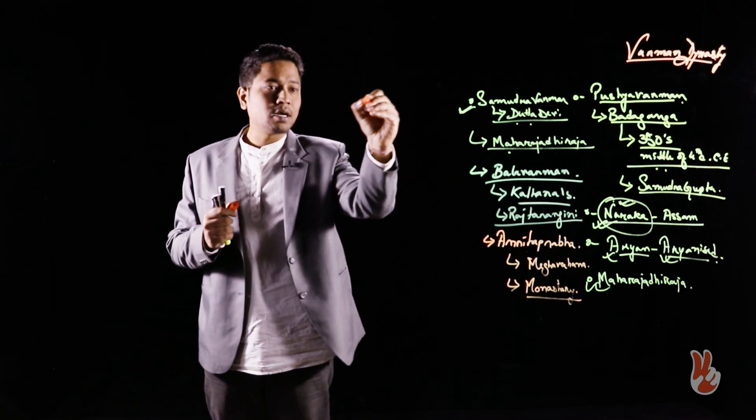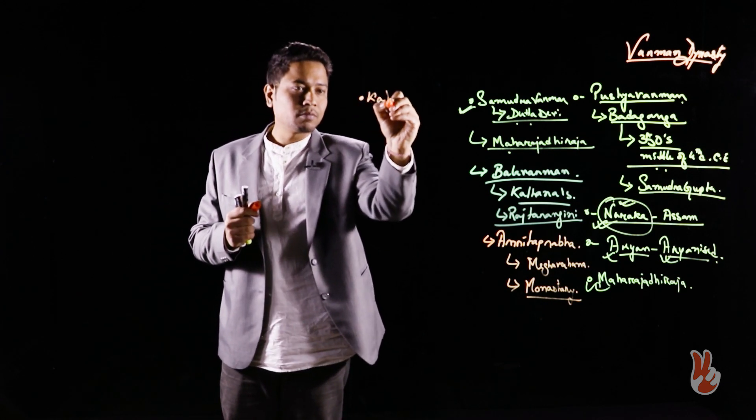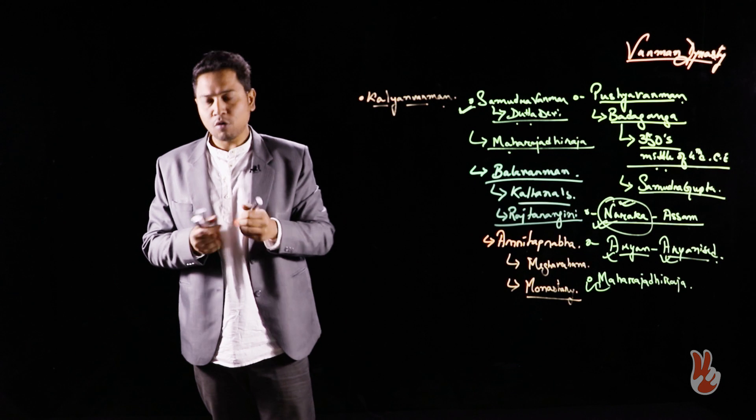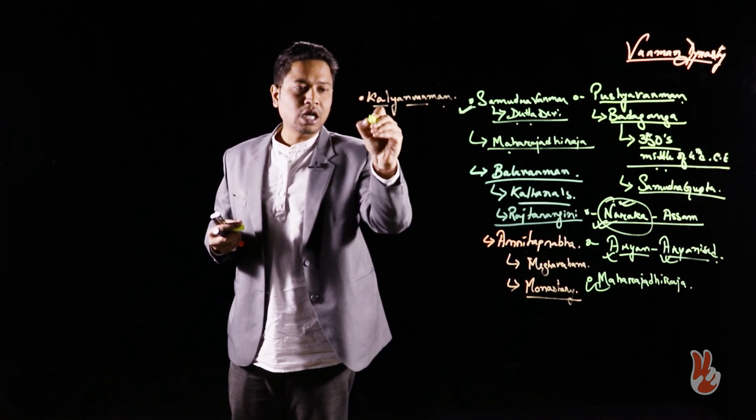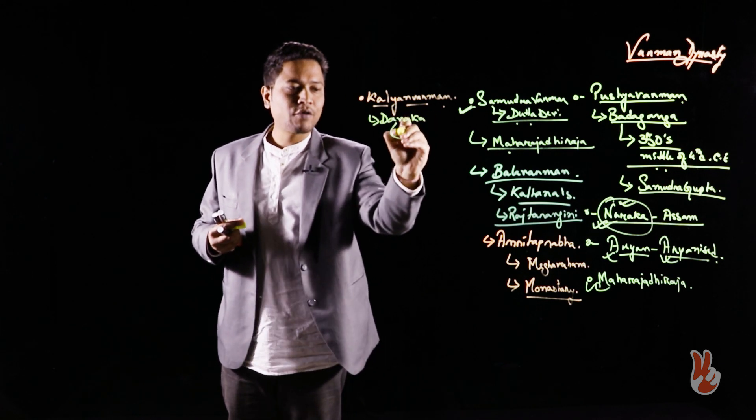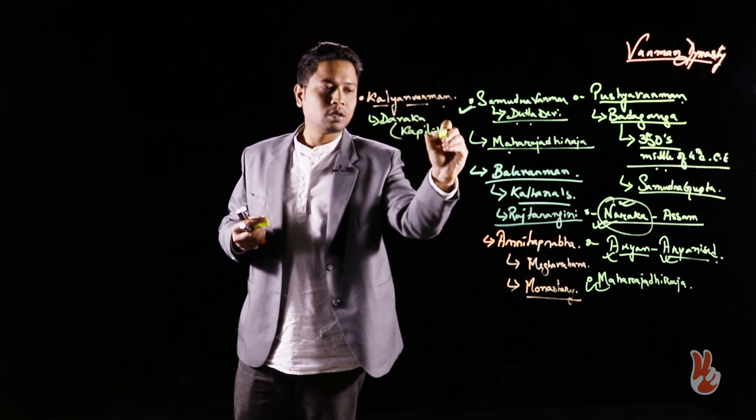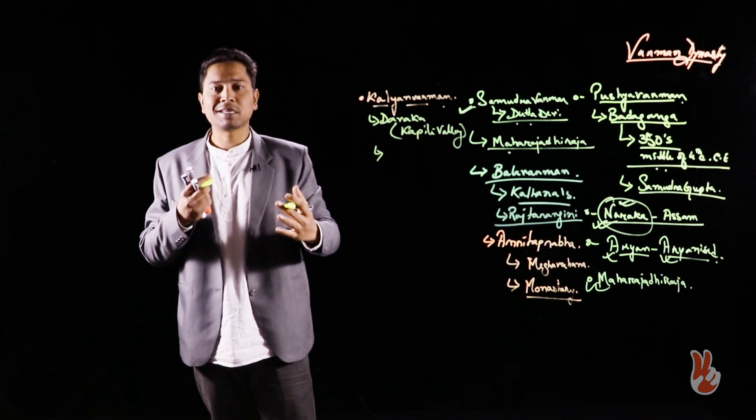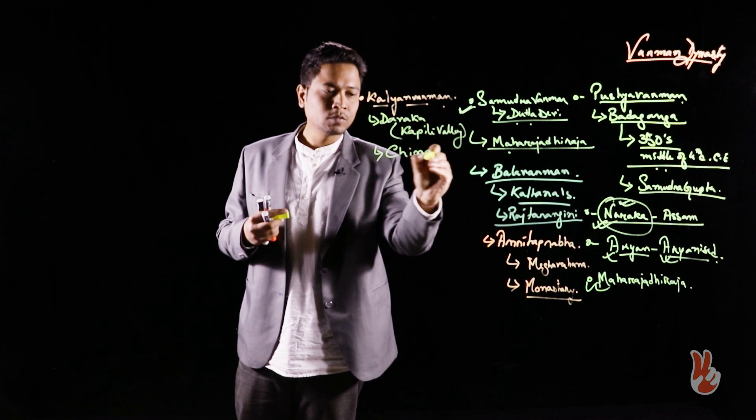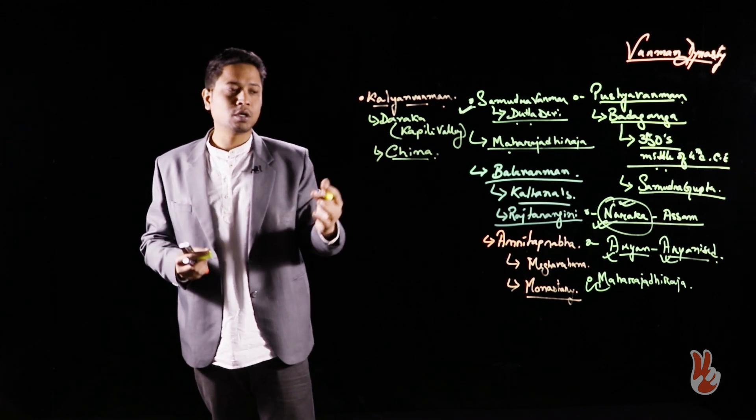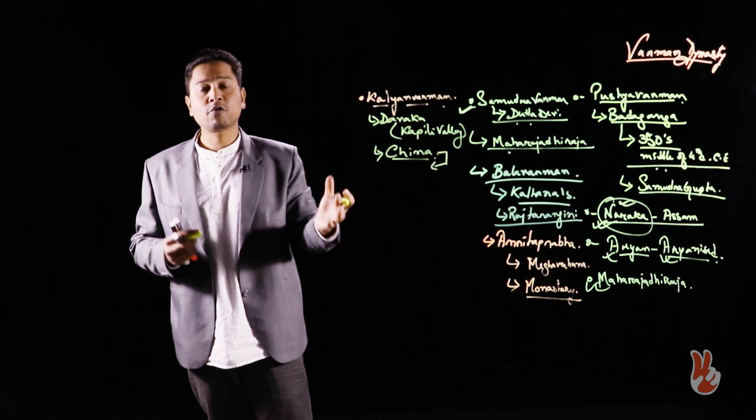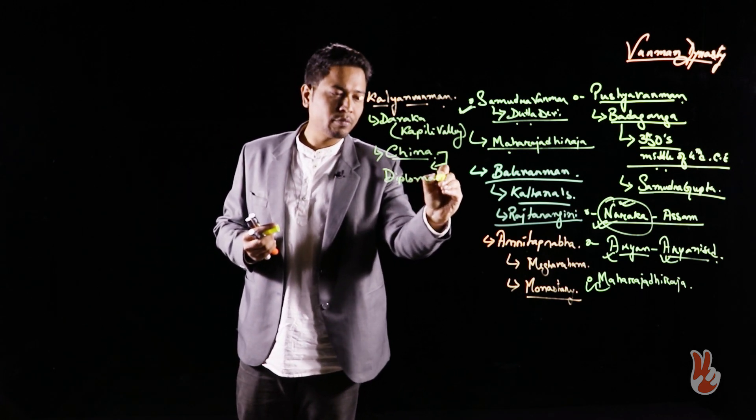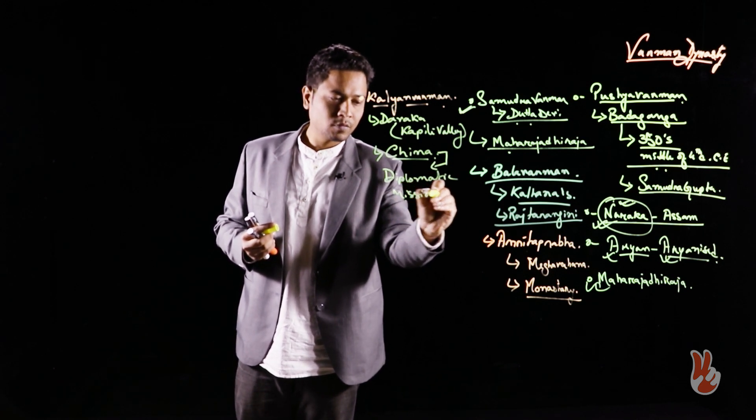This shows that the Varman dynasty by the time of Bala Varman was also forging links with dynasties across India. Next comes in this succession Kalyana Varman. As far as Kalyana Varman is concerned, an important occurrence during his reign is that Davaka, which is identified with the Kapili Valley in Assam, also came under the reign of the Varman. However, it is also stated that Kalyana Varman sent a mission to China. Not very certain, of course, but we can make a conjecture from extant sources that Kalyana Varman sent a diplomatic mission to China.